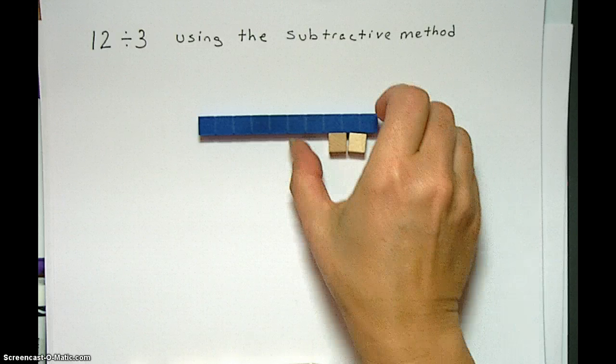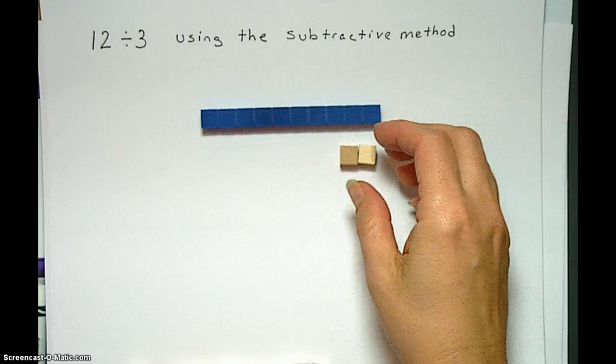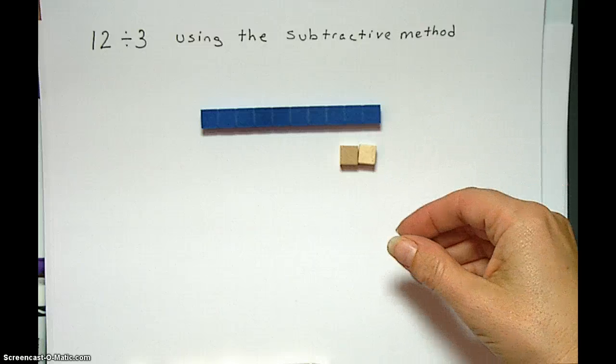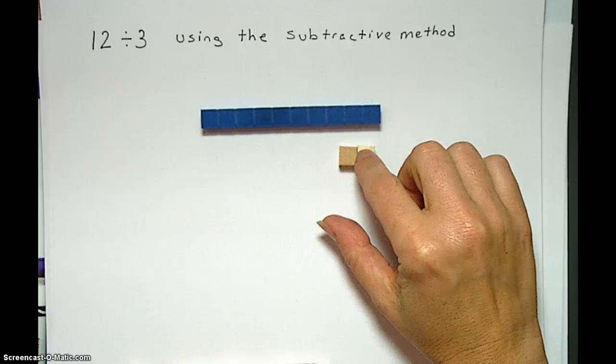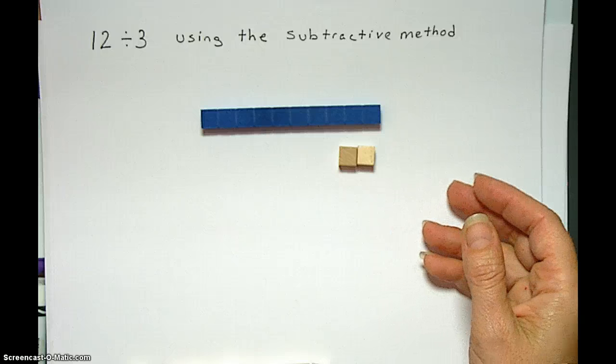So we're going to take this 12 using base blocks this time. There's so many different ways to do this. And we're going to see how many times we can take 3 from this 12. So if we're taking groups of 3, how many groups do we get?